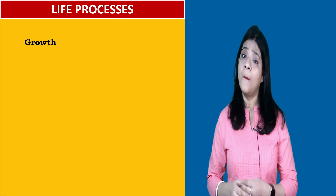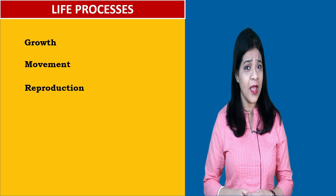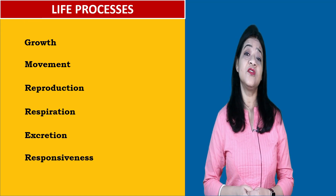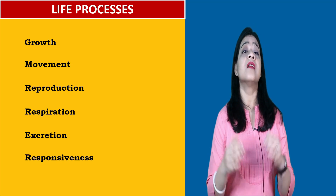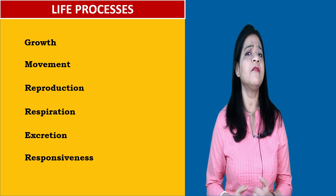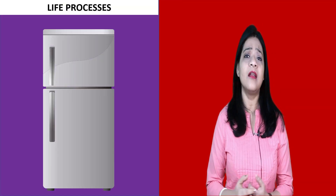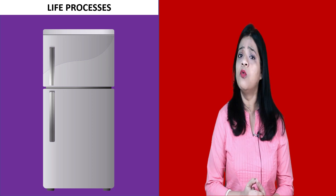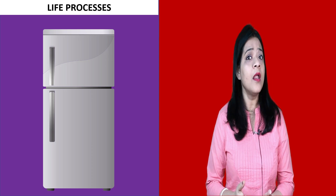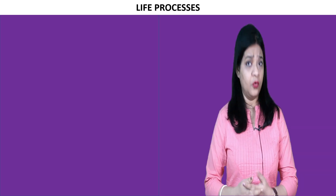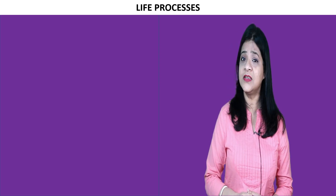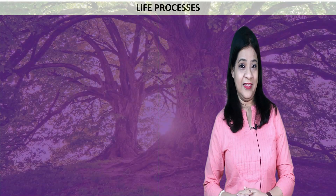So growth, movement, reproduction, respiration, excretion, and responsiveness to external stimulus are some of the traits or characteristics of a living thing, which you will not find in any non-living thing. For example, a refrigerator will not move from one place to another if you don't move it, nor will it grow or reproduce. So these are some of the distinguishing characteristics of living things versus non-living things.